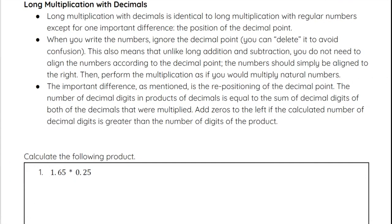Now looking at long multiplication with decimals. It is identical to long multiplication with whole numbers, except we have to consider the position of the decimal point. When you write the numbers, you ignore the decimal point — some people even write without it to avoid confusion. Unlike long addition and subtraction, you do not need to align numbers by the decimal point; instead align by the rightmost digits. The key difference is repositioning the decimal point at the end.